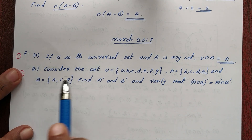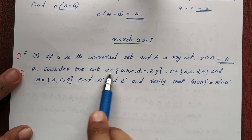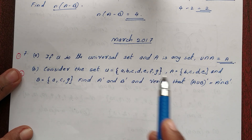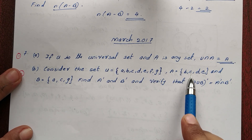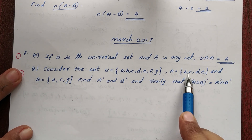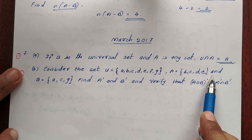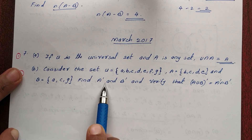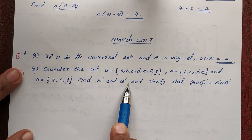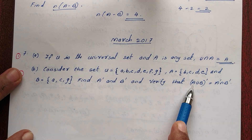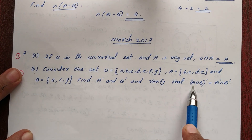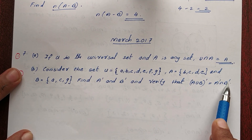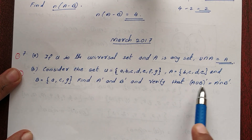Second question: Consider the set U = {A, B, C, D, E, F, G}, set A = {B, C, D, E}, and B = {A, C, G}. Find A complement and B complement, and verify that (A union B) complement is equal to A complement intersection B complement.